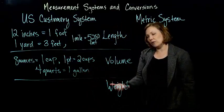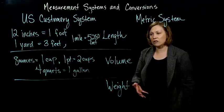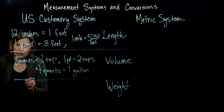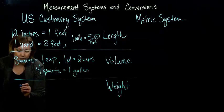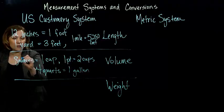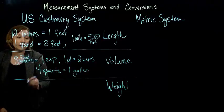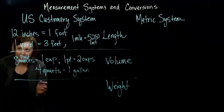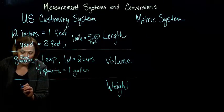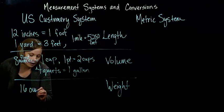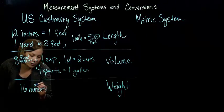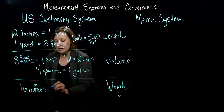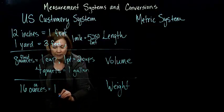The other thing we might want to measure is weight. In the U.S., we usually measure weight with ounces. The volume was fluid ounces, different than weight ounces, which is kind of confusing. For weight, 16 ounces, or sometimes you see it abbreviated OZ, is equal to one pound.